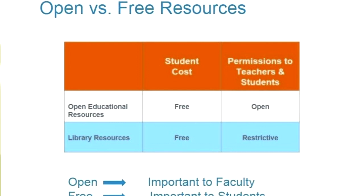Here's another chart to look at. The term 'open' is important to faculty — we want to be able to say anybody in the world can use our courses. 'Free' is what is important to students. For me, my first priority is the students at my institution, and then after that I think about open. One exception is with the Achieving the Dream grant, where all of our resources must be open, so that's definitely something I keep in mind.